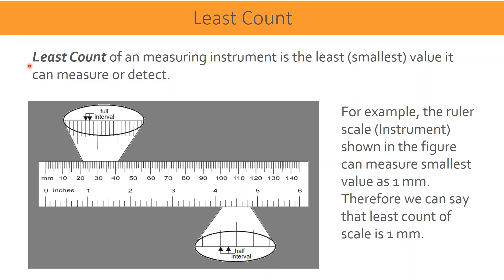Now that we understand what measurement means, it is important to find on the instrument scale what is the minimum size we can measure. Therefore, least count is defined as: the least count of a measuring instrument is the least or smallest value it can measure or detect. In the given example, the ruler scale can measure a smallest value of one millimeter, so the least count of the scale is one millimeter.